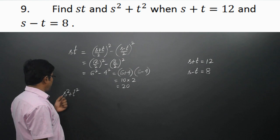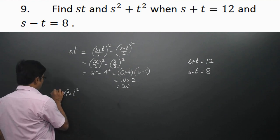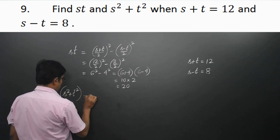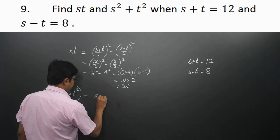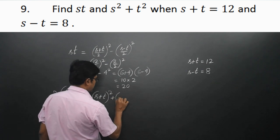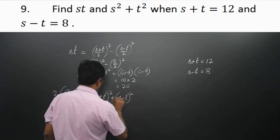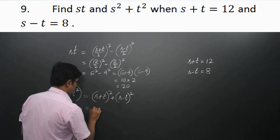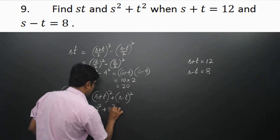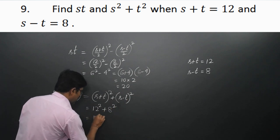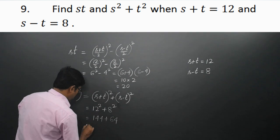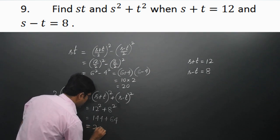Now, to find the value of s² + t², we use the identity: 2(s² + t²) = (s + t)² + (s − t)². With s + t = 12 and s − t = 8, we get 12² + 8², that is 144 + 64, which equals 208.